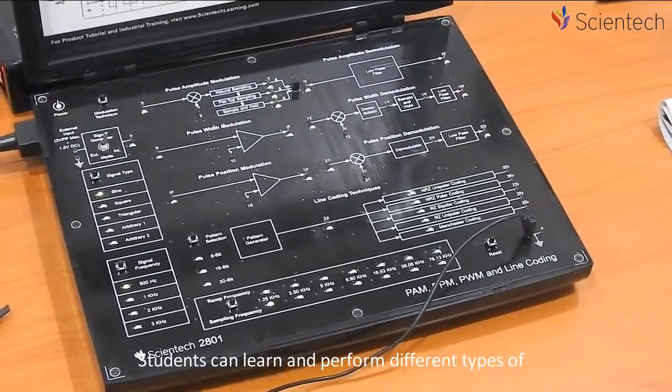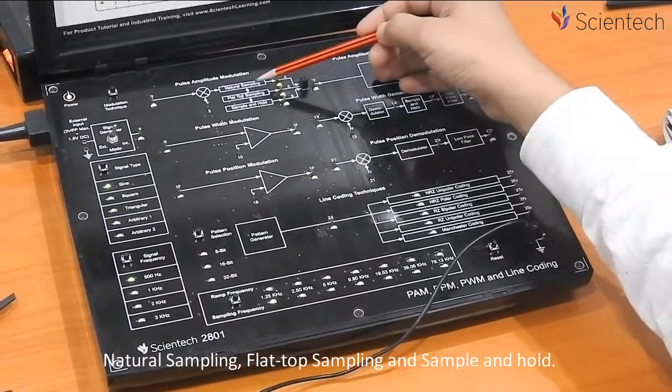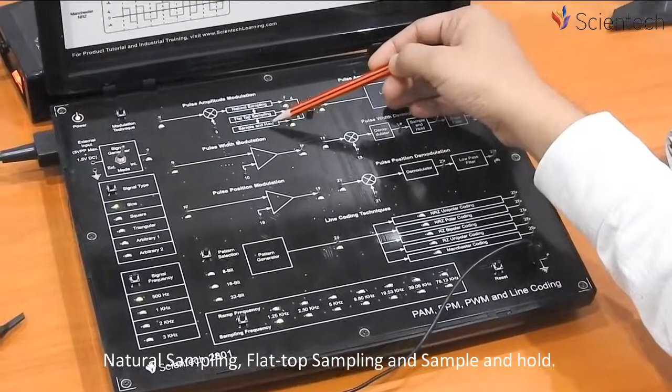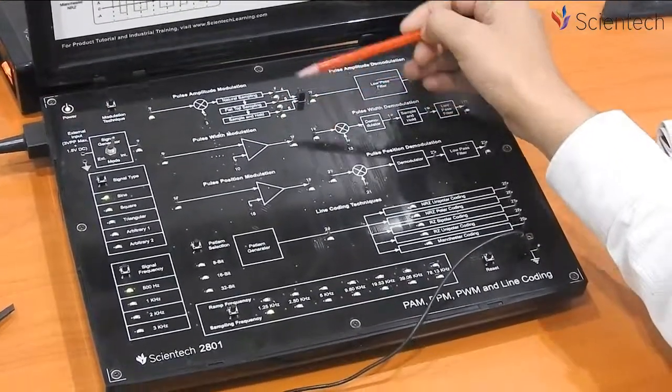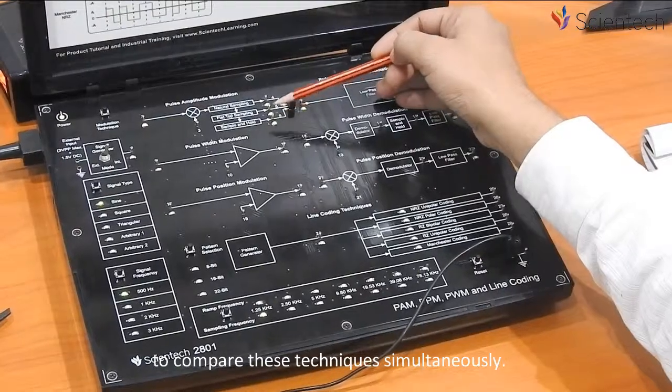Students can learn and perform different types of sampling techniques such as natural sampling, flat top sampling, and sample and hold. Respective test points allow students to compare these techniques simultaneously.